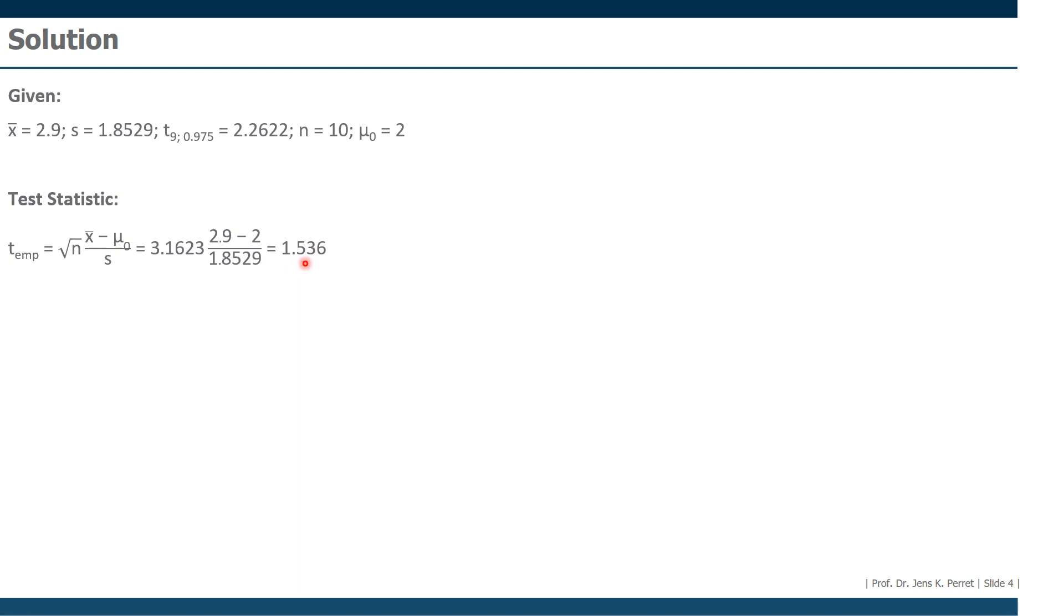That's the value we're now going to compare to our reference statistic. That's our test decision. We compare the test statistic with the reference statistic and we see that our test statistic is definitely smaller. When this is the case, we cannot reject the H0 hypothesis. H0 means there's no significant difference between arithmetic mean and test value.